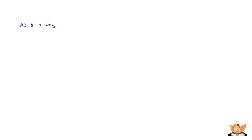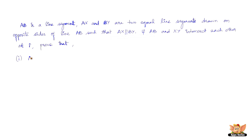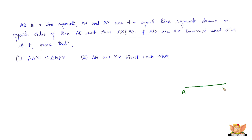Let us try and solve another problem. AB is a line segment. AX and BY are two equal line segments drawn on opposite sides of line AB, such that AX is parallel to BY. Now if AB and XY intersect each other at P, we need to prove that triangle APX is congruent to triangle BPY, and that AB and XY bisect each other.